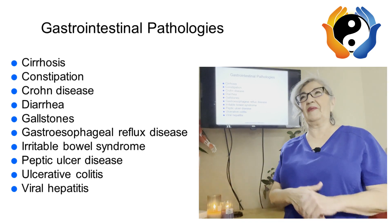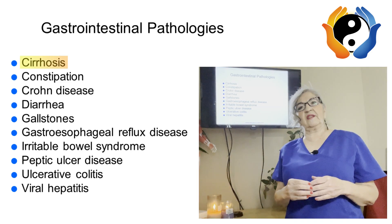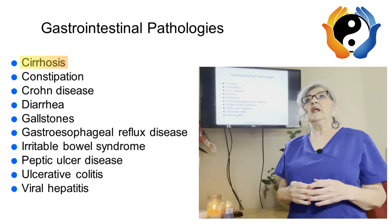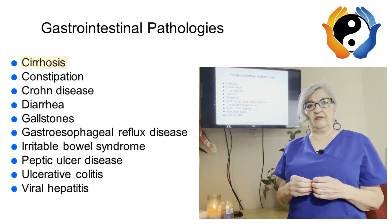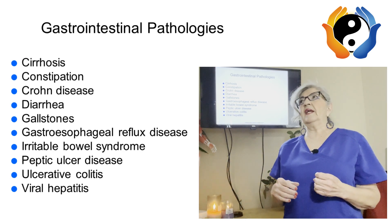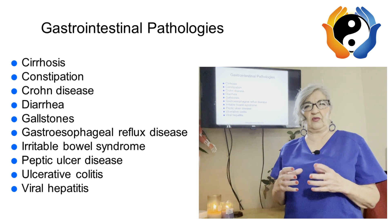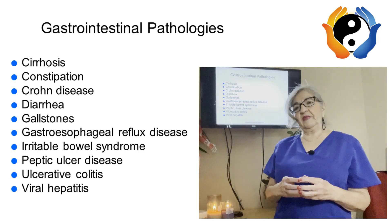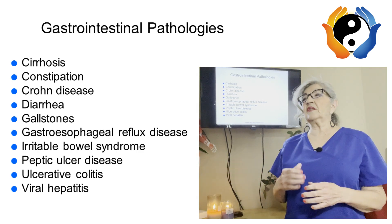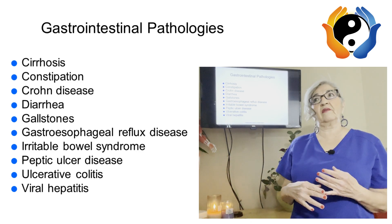Let's start with cirrhosis — that's a progressive degeneration and regeneration of the liver. The tissues of the liver break down and are destroyed, but they're also replaced, creating fibrous tissue. The liver has over 300 functions, which is a lot.